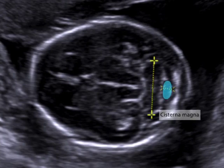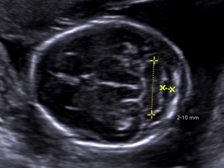The cisterna magna is a fluid-filled space behind the cerebellum that is measured by placing calipers just inside its borders. The cisterna magna normally measures between 2 and 10 millimeters.